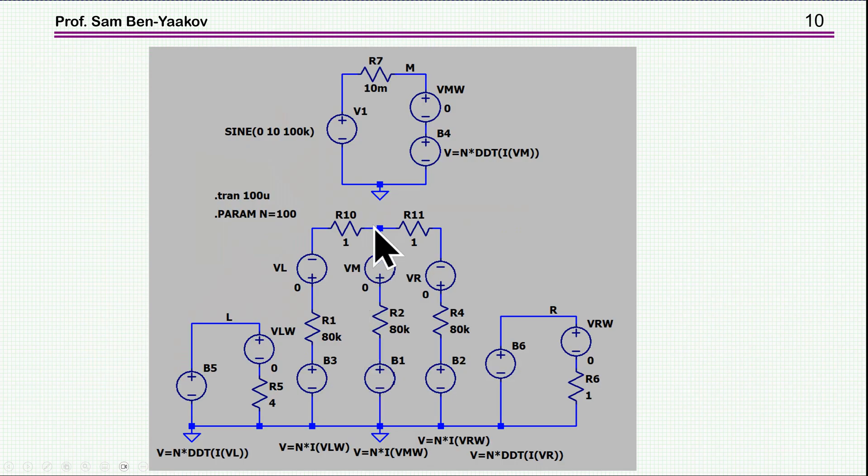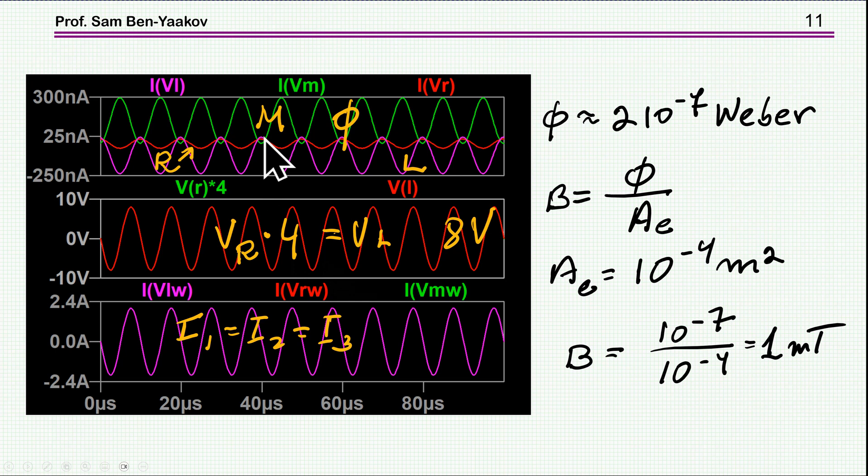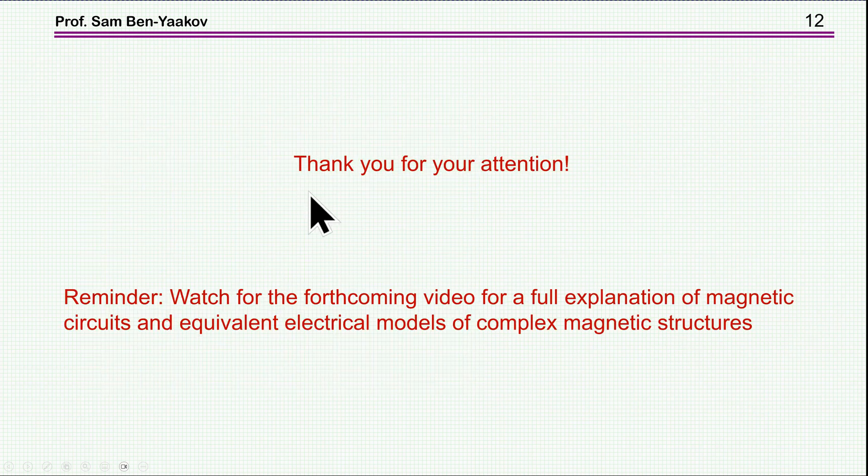So an assumption that the flux of the mid leg is sort of divided equally on each side is just incorrect. So knowing the magnitude of the flux, or the order of magnitude I should say, we can have a notion of what would be the flux density in this particular case. And so the flux density is the flux over the cross section area. And in this particular case it is only one milli tesla. So this is really a core that can sustain a much higher power. This is just an example of course.